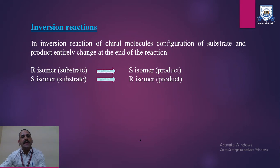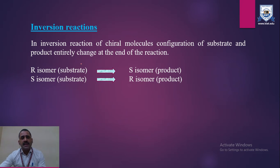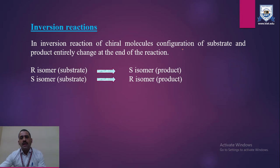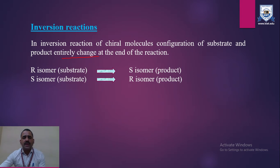The next type of reaction is the inversion reaction, or inversion of configuration. Here the substrate will be totally different from the product when we consider their configuration. When the configuration of the chiral molecule's substrate and product is entirely changed, the reaction is called an inversion reaction. The overall configuration of the product is flipped due to the different mechanism of the reaction.